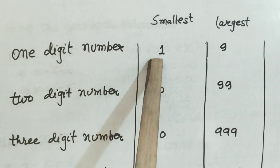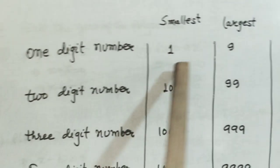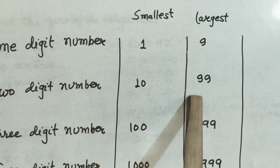One digit number: smallest one is 1, largest one is 9. Two digit number: smallest one is 10, largest one is 99.